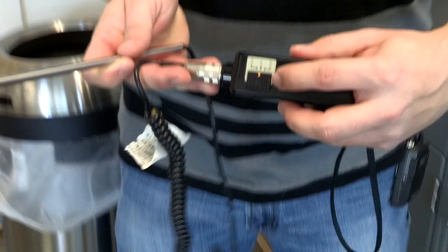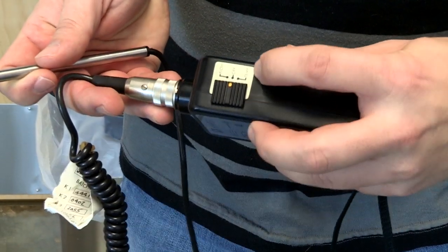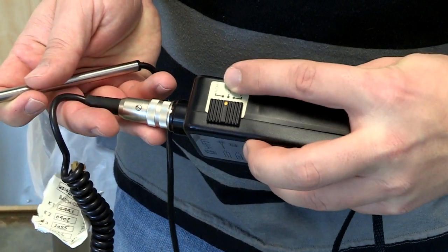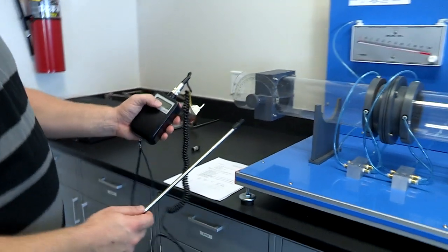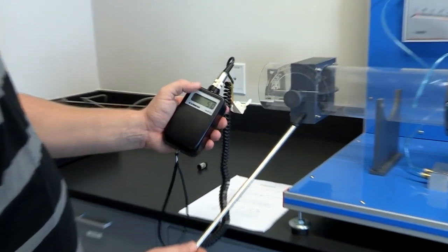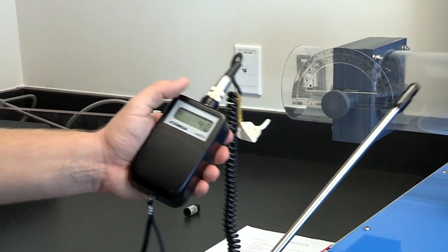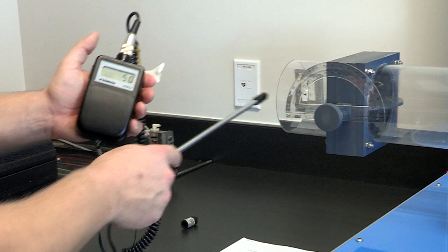On this side right here, you have two different options: you have temperature or you have your flow. We're going to switch it to the flow. If there's no movement or if you have the cap on, it should show zero, but if there's any type of airflow, it's going to adjust.